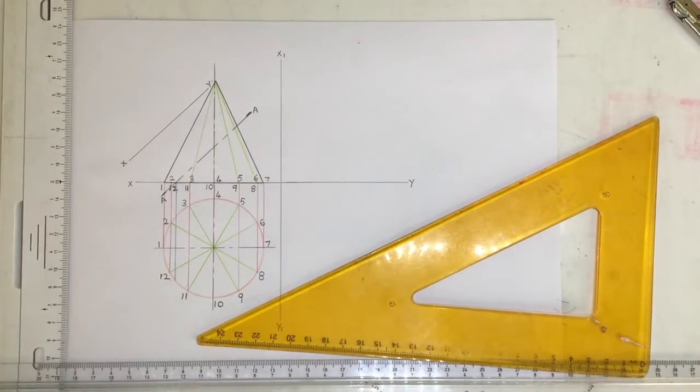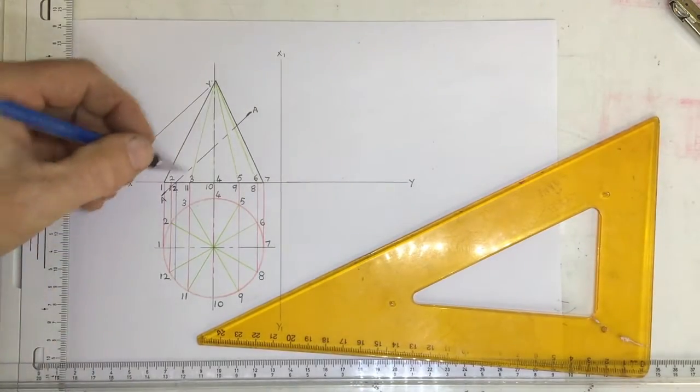Alright, what we're going to look at here is the solid geometry of this cone, and what we need to do is to section it through this cutting plane over here.